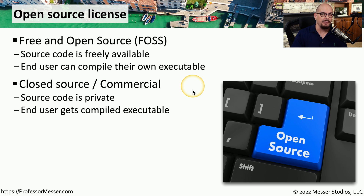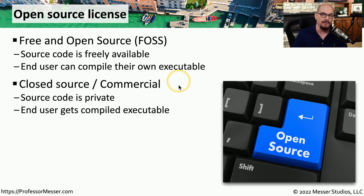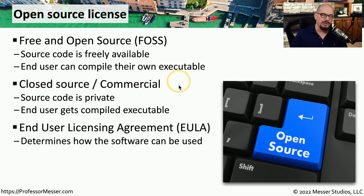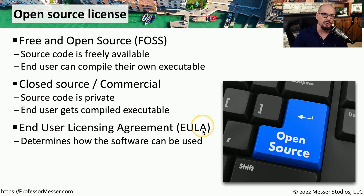If you're purchasing an operating system from Microsoft or Apple, you're probably using closed source or commercial software. With closed source, you don't have access to the source code and can't compile the software yourself — instead, you're provided the executable from the manufacturer. Once all of the terms for the software are decided upon, they're put into a single licensing document called an end user licensing agreement, or EULA. This EULA is often a long scrolling document during installation that many people page through and click OK without reading, but its contents dictate exactly how the software should be used. Very often there's a negotiation between the end user and manufacturer to create a EULA that fits best for the customer.